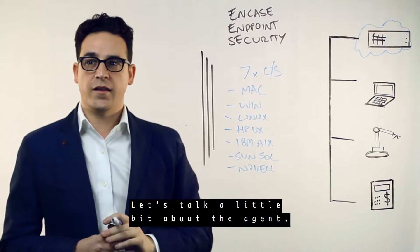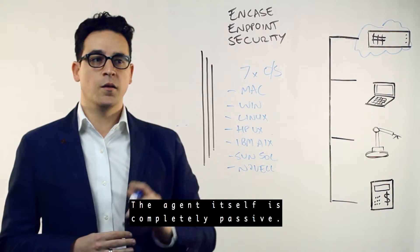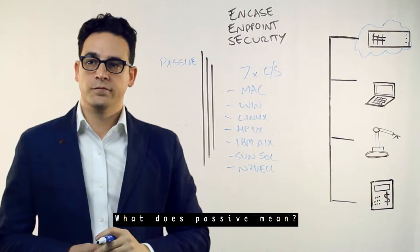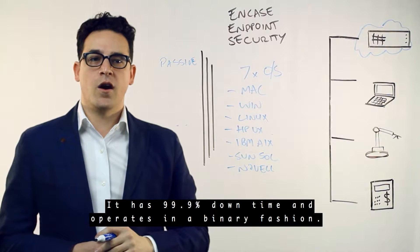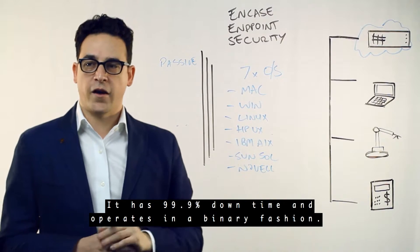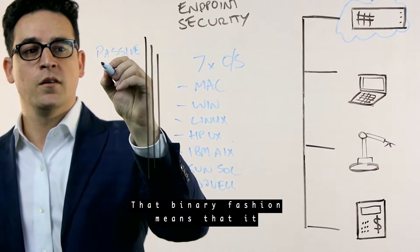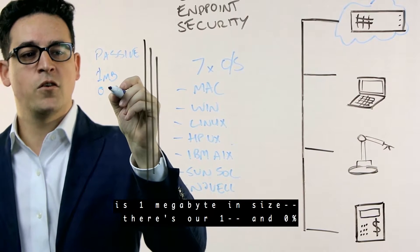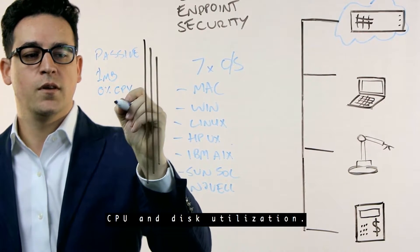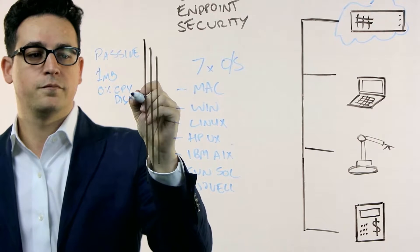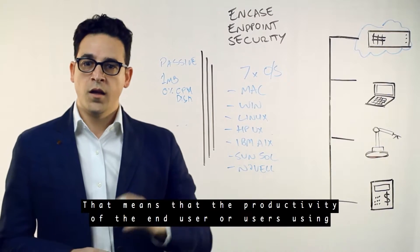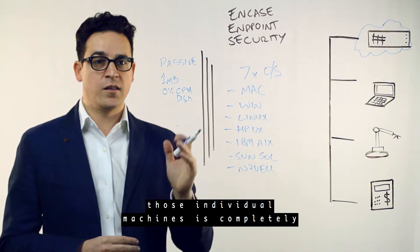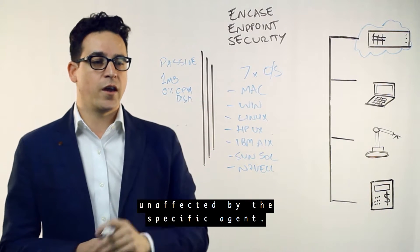The agent itself is completely passive. What does passive mean? It has 99.9% uptime and operates in a binary fashion. That binary fashion means it is one megabyte in size — there's our one — and 0% CPU and disk utilization. That means the productivity of the end user or users using those individual machines is completely unaffected by this specific agent.